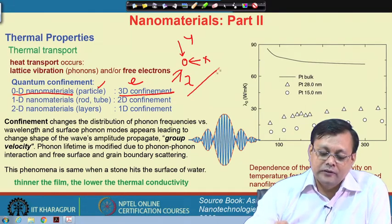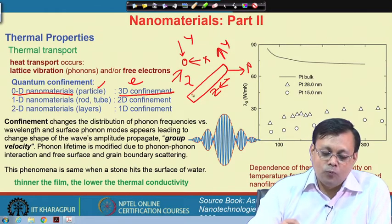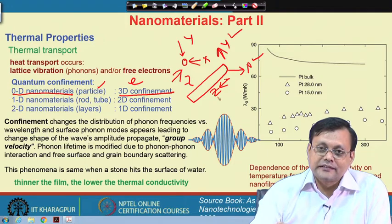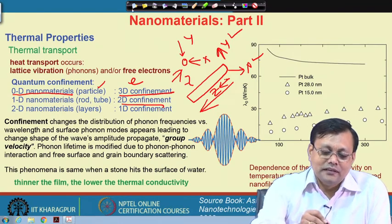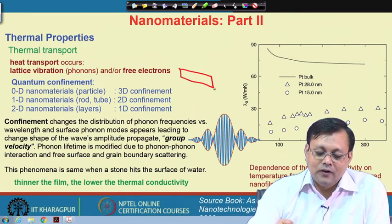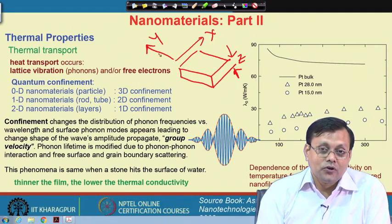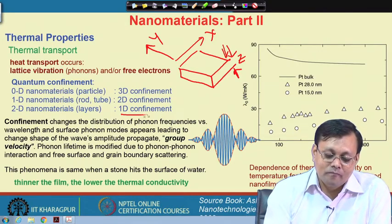For a 1D nanomaterial like a rod (with z along its length), electrons are confined in y and x directions but free along z — this is 2D confinement. For a 2D nanomaterial like a thin sheet where the thickness is in the nano range (z direction), electrons are confined only along z — this is 1D confinement.